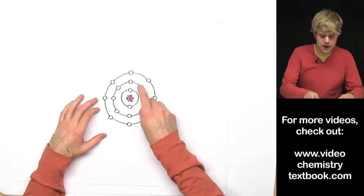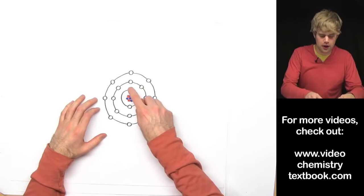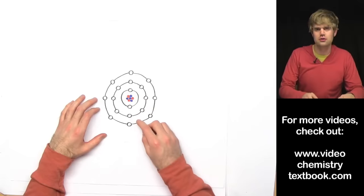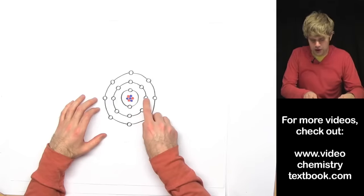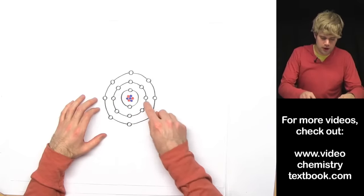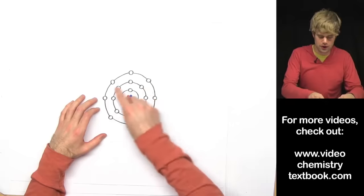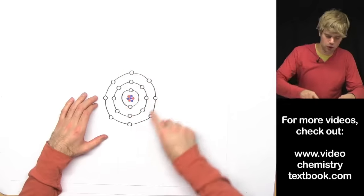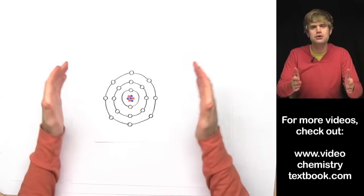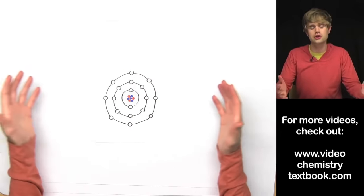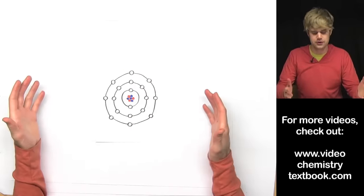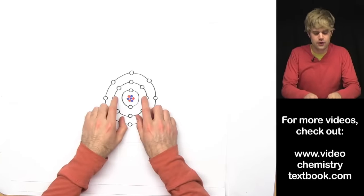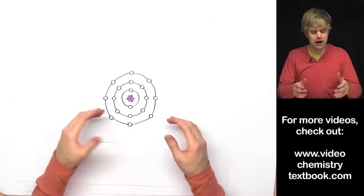This first energy level or shell can hold two electrons really close to the nucleus. Moving out a little bit, the next shell can hold eight electrons, and then even further out there's another group that can hold eight electrons. It keeps going — there are more and more energy levels — but I just wanted to focus on these first three to give you an idea of how they work.